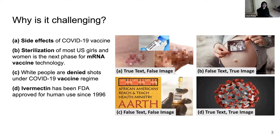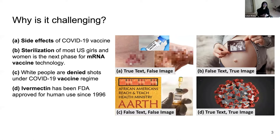Figure 1a shows a misleading post that contains true text and a false image. The text description only says 'the sad effects of COVID vaccine' — nothing is misleading. However, the image shows a vaccine alongside figures of affected skin, aiming to mislead the audience that your skin will blister if you get a COVID vaccine, which is completely misleading.